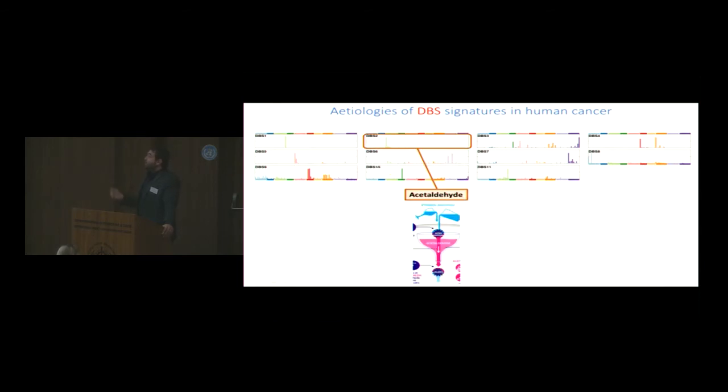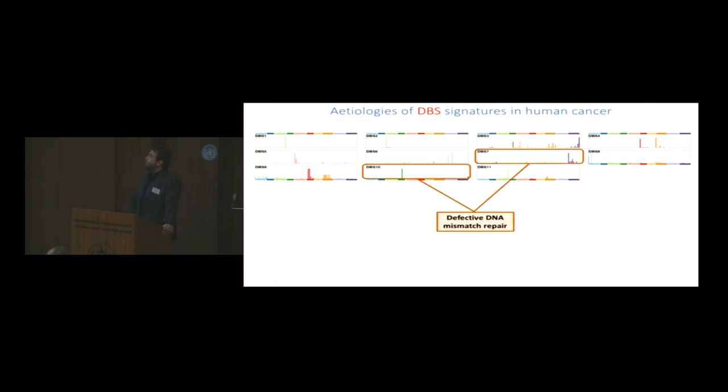That's exactly what one would expect to see in cancers of the skin, such as melanoma. And indeed, that's what we were able to assign as etiology. Interestingly, we were looking at acetaldehyde, and we would propose DBS2, its etiology is probably linked to acetaldehyde, which we do not have at this moment experimental validation, but we have some correlative studies and associative studies. Platinum therapy generated its own double-base substitutions. Defective polymerase Epsilon had its own double-base substitutions. Defective mismatch repair had its own two signatures. We believe the APOBEC signatures, in addition to single-point mutations, generate these double-point mutations.